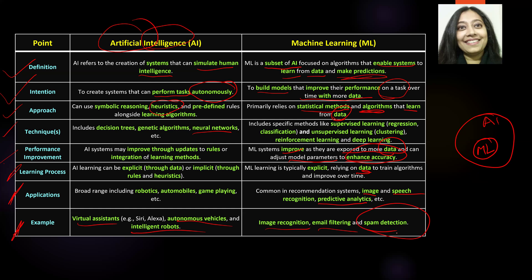These are some of the key points. You need not remember all of them, but I would say remember four or five — for example, the definition and the intention, which are pretty simple. You could also include the techniques, to differentiate between them. That gives you the top three. You could also add the learning process and, of course, application or example. That way, you can answer this question highly effectively.